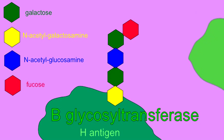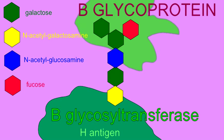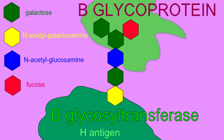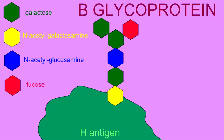If an individual possesses a different allele of the enzyme glycosyl transferase, then the monosaccharide galactose is added at the end of this chain instead of N-acetylgalactosamine, and this oligosaccharide chain will define individuals with blood type B.